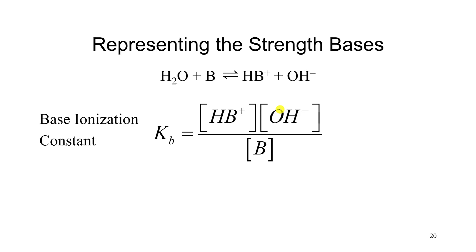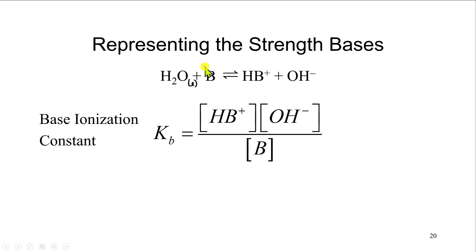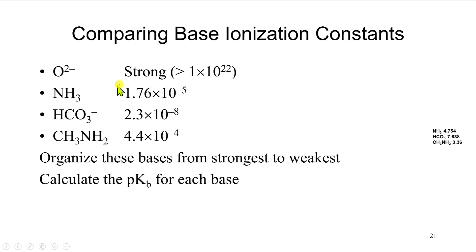Bases can be represented by Kb values, just as acids are represented by Ka values. The Kb expression is what you'd expect: the base plus water makes the conjugate acid plus hydroxide. The base ionization constant expression is HB⁺ times OH⁻ divided by B, leaving water out because it's in the liquid state. Examples include NH₃, HCO₃⁻ (the conjugate base of carbonic acid), and CH₃NH₂, known as methyl amine.